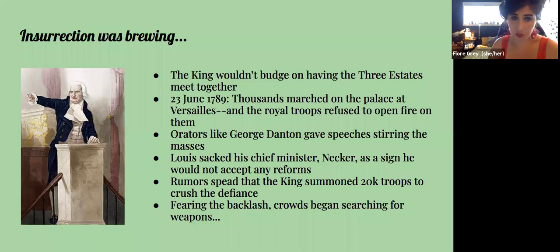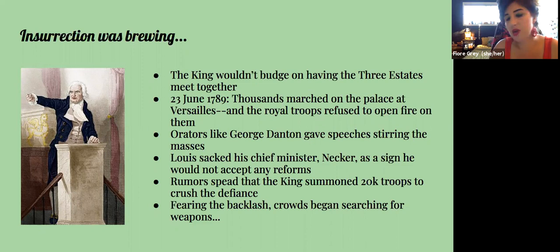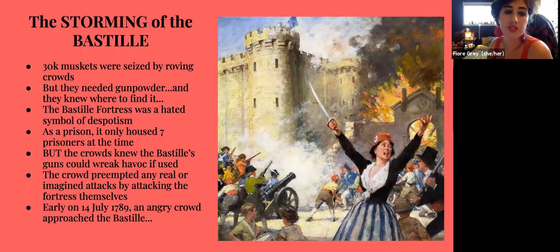Insurrection was brewing. The king wouldn't budge on having the three estates meet together. Thousands marched on the palace at Versailles, and the royal troops refused to open fire — a decisive indication that the troops were on the side of the insurrectionists. Leaders like Danton were giving stirring speeches, and Louis sacked his chief minister as a sign he would not accept any reforms. Rumors spread that the king had summoned 20,000 troops to crush the defiance, and fear of this royal backlash led crowds to begin searching for weapons — which led to the storming of the Bastille.